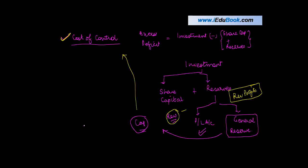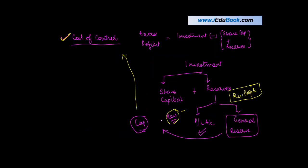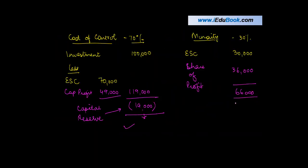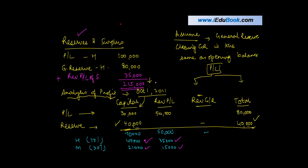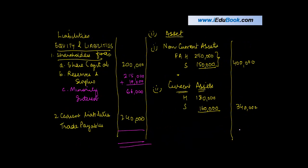The capital reserve of Rs. 19,000 is also added to reserves and surplus. The balance sheet total comes to Rs. 7,40,000 on both sides, confirming it tallies correctly.